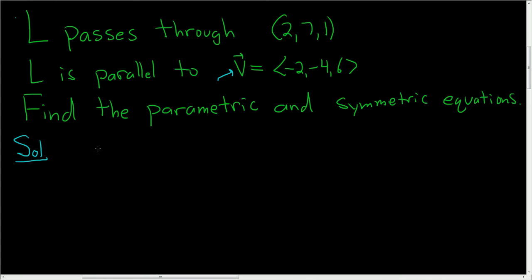So the formula for the parametric equations is X equals X₁ plus AT, and we have Y equals Y₁ plus BT, and then Z equals Z₁ plus CT.